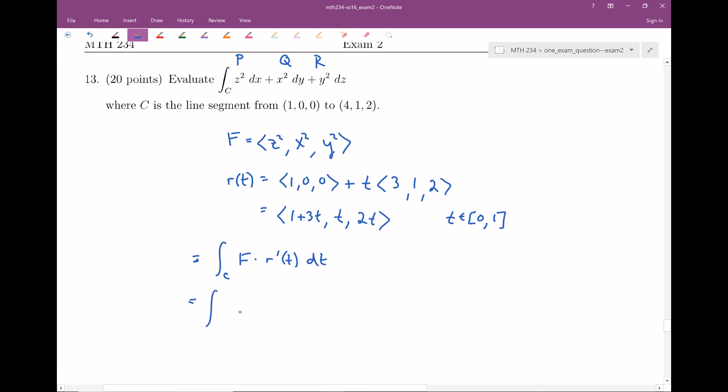Let's go ahead and start plugging some stuff in. So our F, that's gonna be the vector field Z squared, X squared, Y squared. And then I need R prime of T. Well, I have R of T, so I can calculate out R prime fairly quickly. Let's just do this in line here. So if I take the derivative of the X component, I'm gonna get three. If I take the derivative of the Y component, I'm gonna get one. If I take the derivative of the Z component, I'm gonna get two. DT, what are my bounds? Well, T ranges from zero to one. Remember, this is my T integral. So I'm gonna go from zero to one.